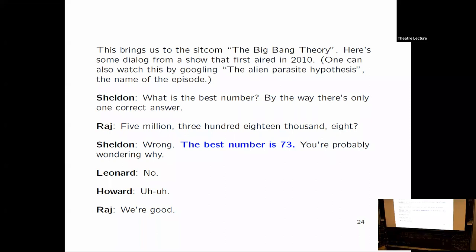So here's some dialogue from this show. Sheldon, who's the lead character on The Big Bang Theory, says, what is the best number? By the way, there's only one correct answer. The other character says 5318008. And then Sheldon says, wrong. The best number is 73.